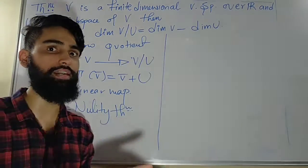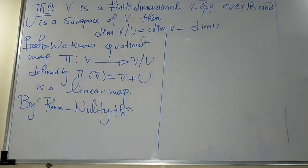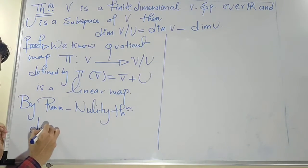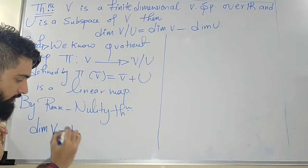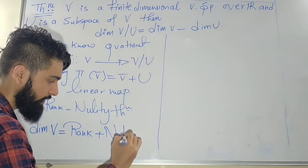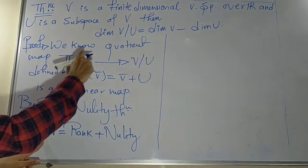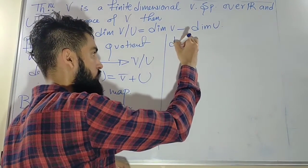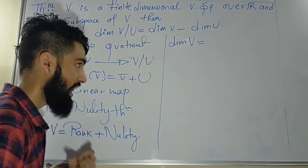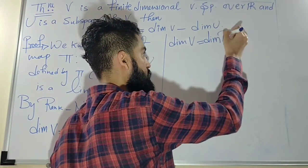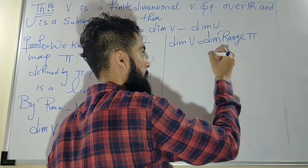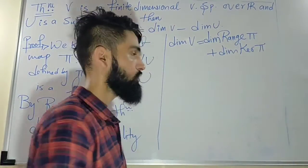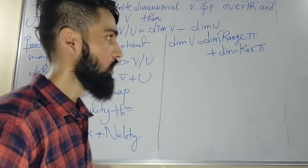By the rank-nullity theorem — also called the fundamental theorem of a linear map — since the map is from V, we know that dimension of V equals rank plus nullity. That is, dimension of V equals the dimension of the range of π plus the dimension of the kernel of π. You should know what range and kernel are before proceeding.